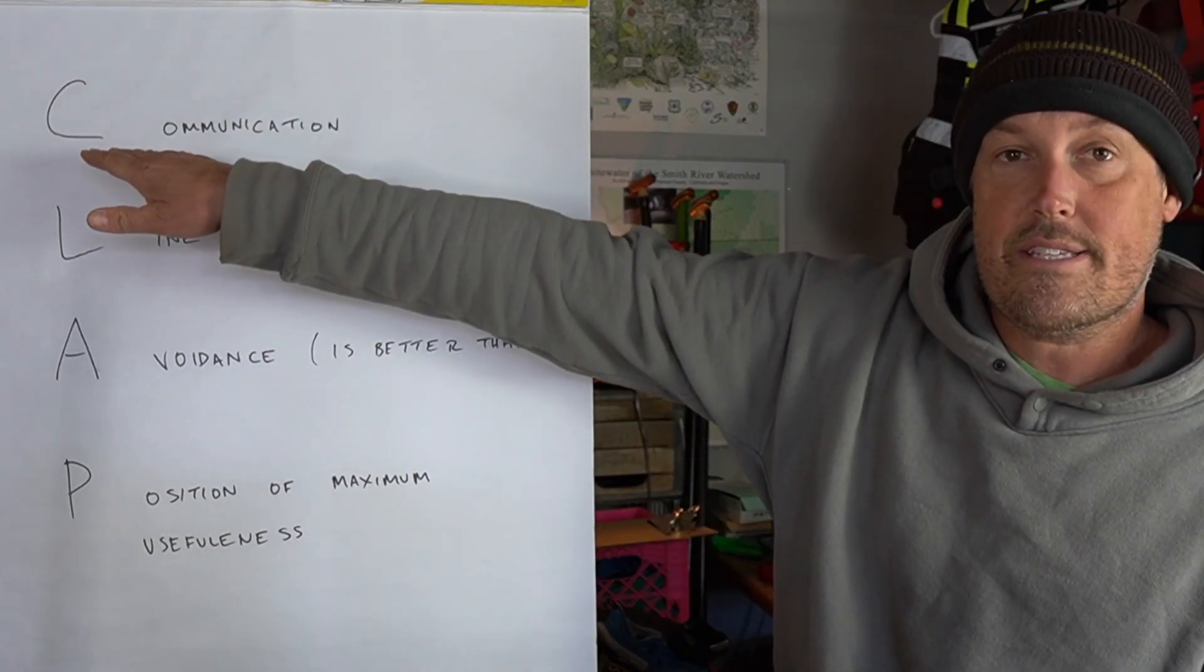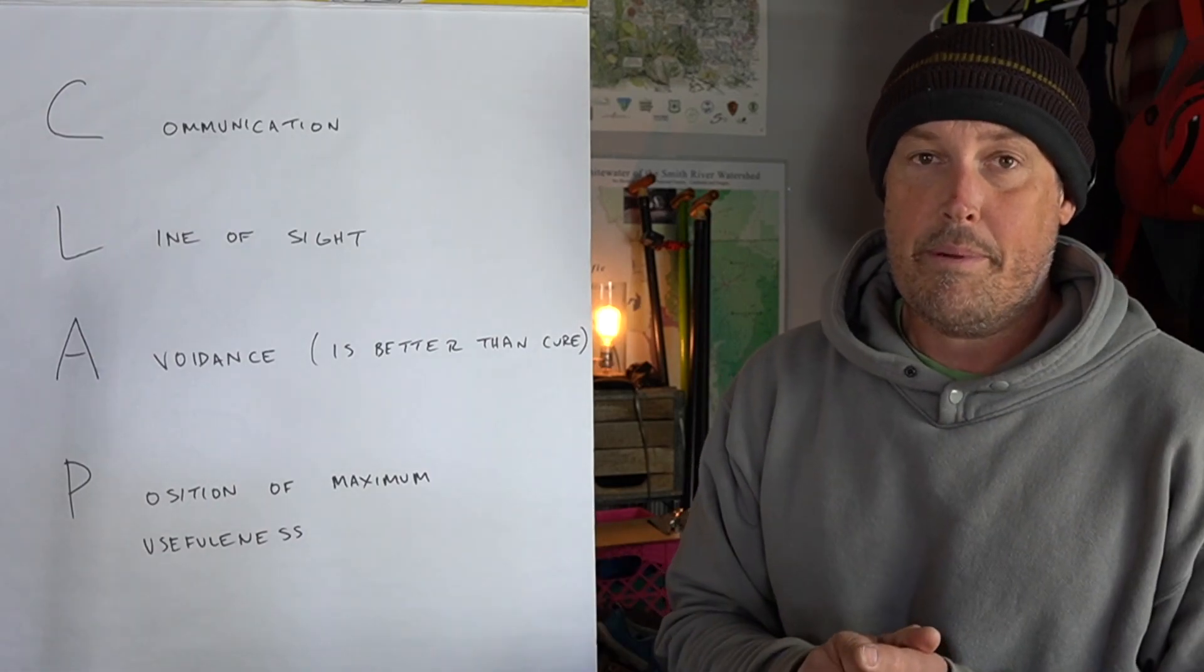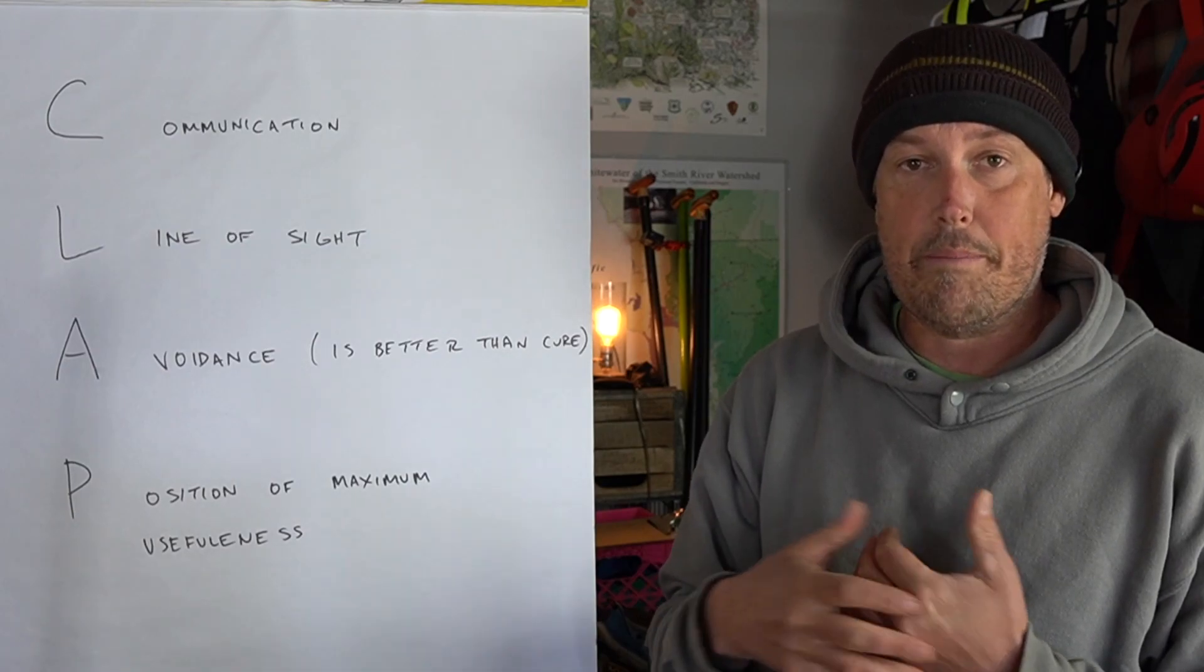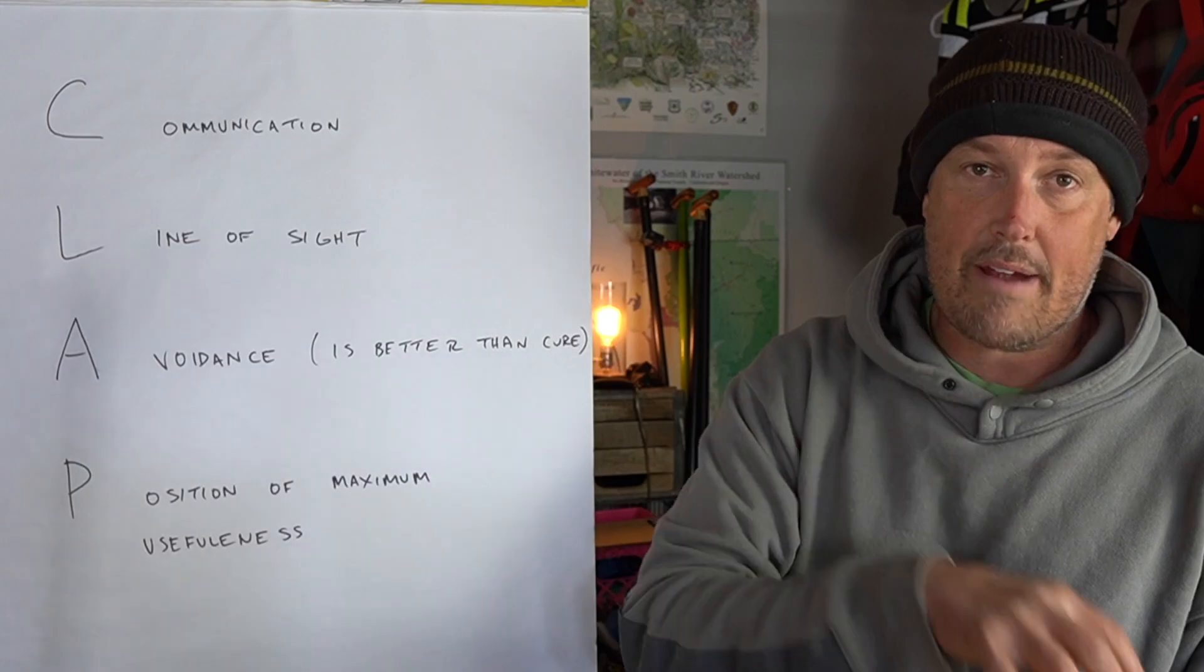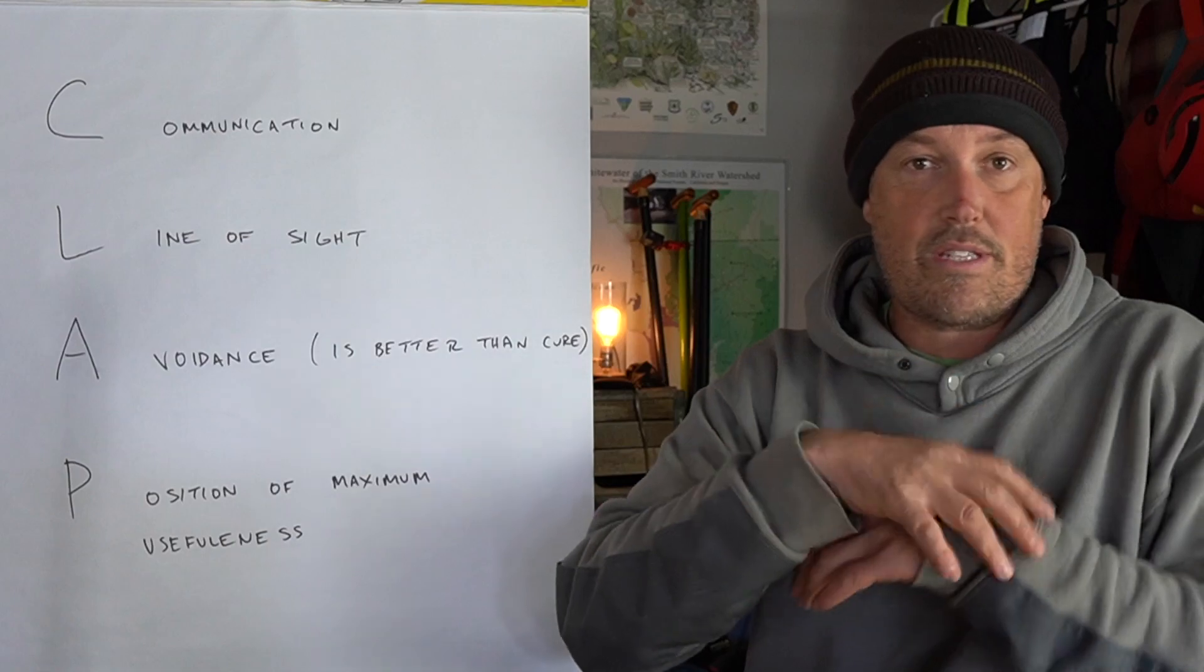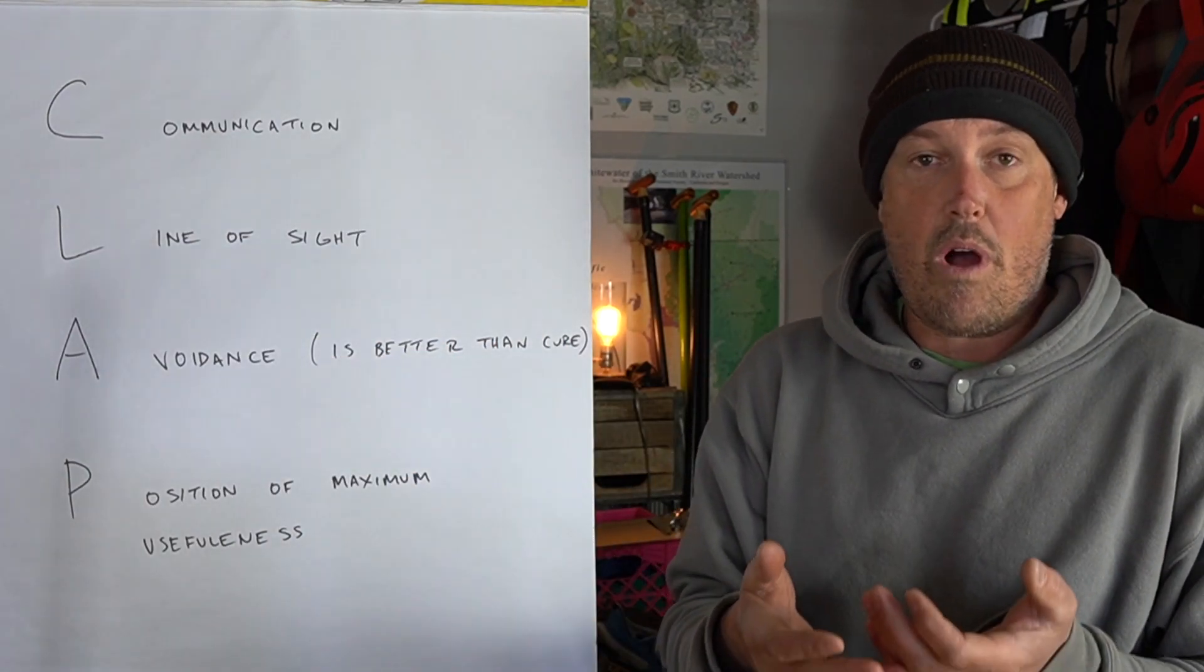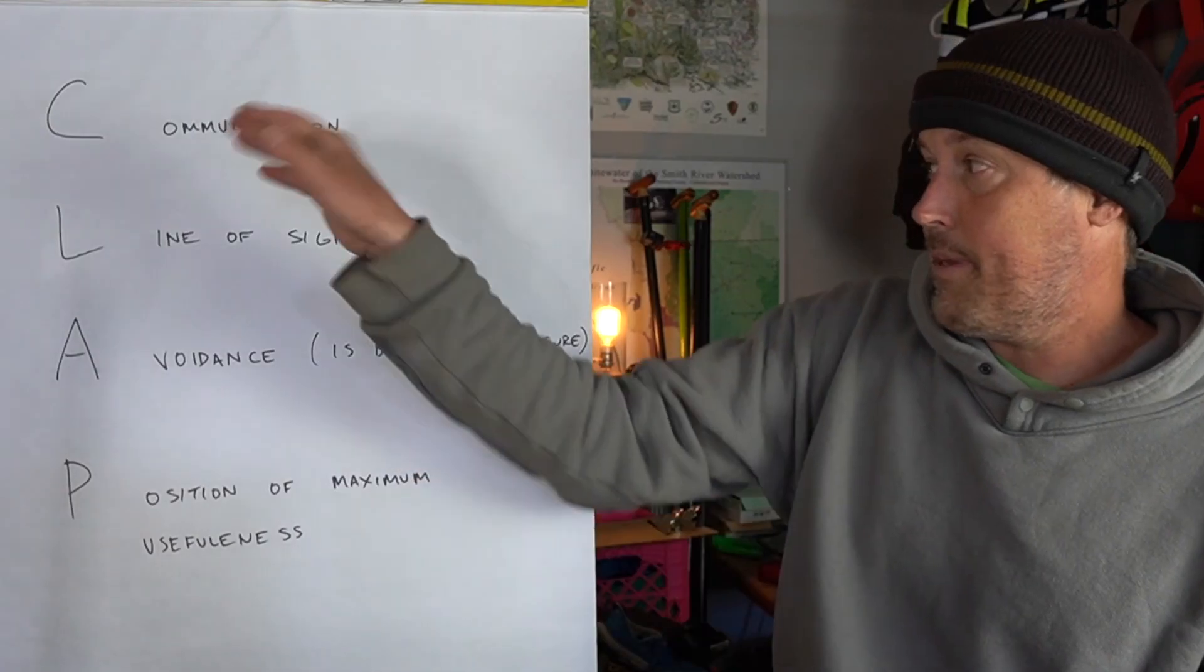The C in CLAP is communication. This really comes down to having good river signals and communication with the people you boat with. Kayakers have different signals than rafters. Colorado has different signals than Oregon. The rest of the world has different signals. So everywhere you go, the hand signals and even whistle signals can be different. Getting into agreement about communication so we don't have miscommunications on the river or in a rescue situation, that's a big one.